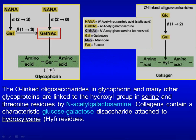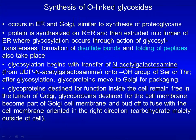Collagens contain a characteristic glucose-galactose disaccharide attached to hydroxylysine residues. Synthesis of O-linked glycoproteins occurs in the ER in a manner similar to synthesis of proteoglycans. Protein is synthesized on the rough ER and then extruded into the lumen of the ER where glycosylation occurs through the actions of glycosyltransferases. Glycosylation begins with transfer of N-acetylgalactosamine onto a hydroxyl group of serine or threonine residues.